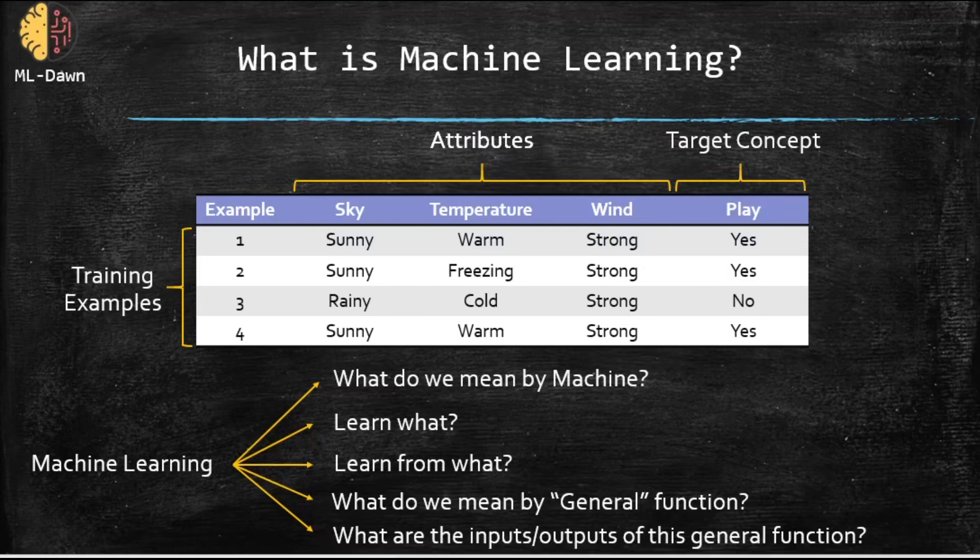Now look at this table. We have four training examples. Each example consists of three attributes: sky, temperature, and the wind. And the last column is also called the target concept or the ground truth or the target feature. Different names, different terminologies that refer to the same thing.